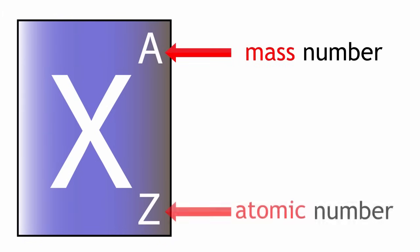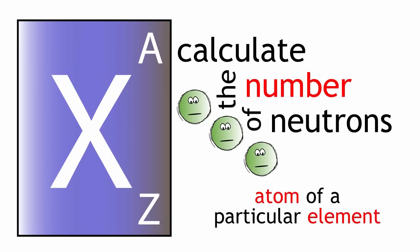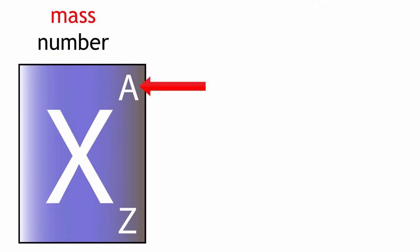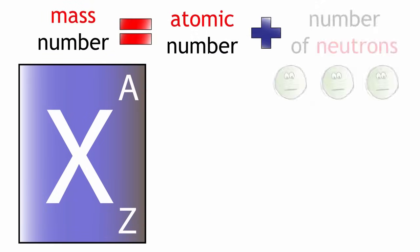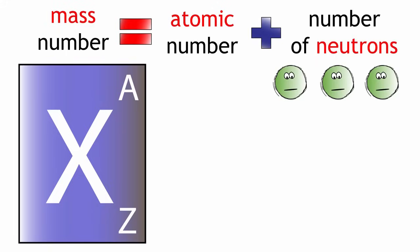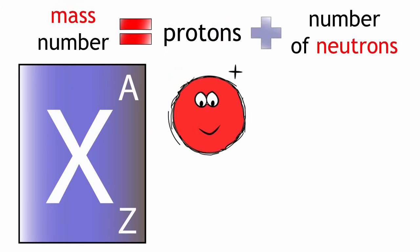So if we know the mass number of an element and we know the atomic number, we can calculate the number of neutrons in an atom of a particular element. The mass number equals the atomic number plus the number of neutrons. The atomic number is just the number of protons in an atom. Therefore, mass number equals protons plus neutrons.